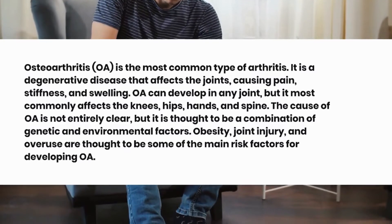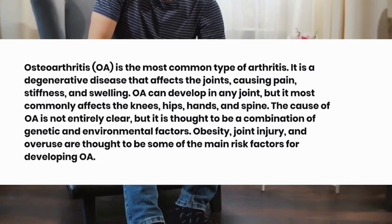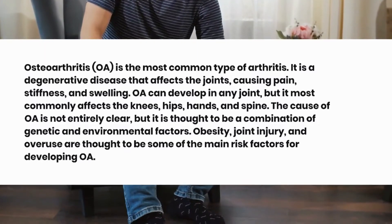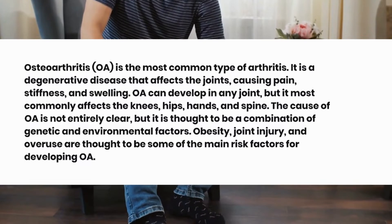OA can develop in any joint, but it most commonly affects the knees, hips, hands, and spine.